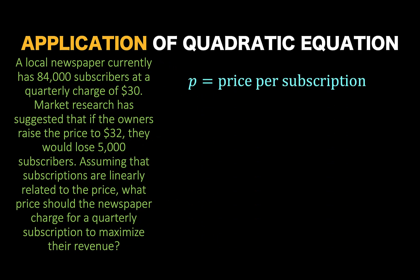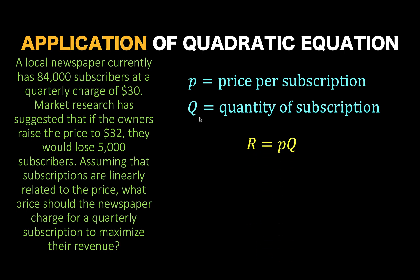Let's begin by defining a variable P to be equal to the price per subscription, and another variable, capital Q, to represent the quantity of subscriptions. Then the product of this price and the quantity of subscription would be equal to the total revenue.